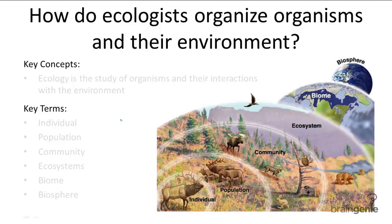In order to gain a complete understanding of how organisms live, biologists must study both the micro and the macro of all living things. The micro would be something like the elements, the cells, the tissues, biological processes and so on, whereas the macro would be the study of organisms and how they interact.